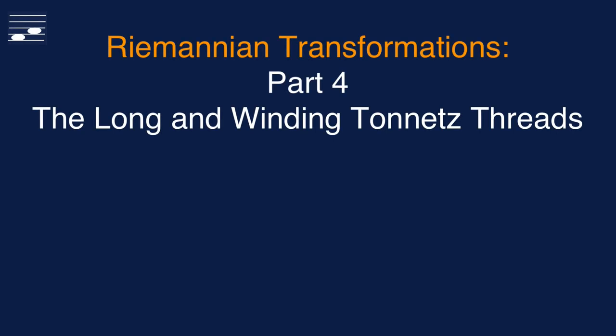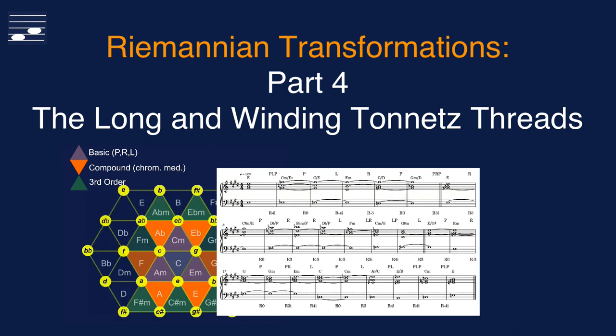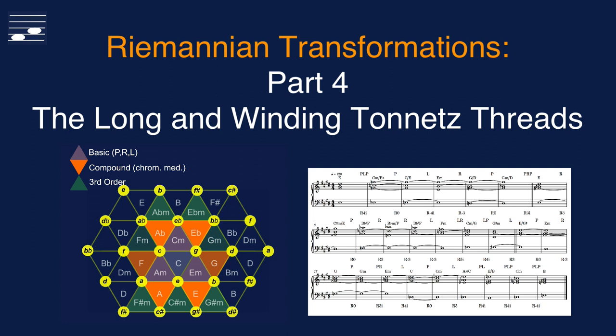In the final episode from the series on Neo-Riemannian transformations, I'll present two somewhat longer composition examples. These are based on chord progressions that move along a path in the Tonnetz diagram covering many major and minor triads. This is achieved by using both basic and compound transformations. At the end I'll comment on the potential and limitations of Neo-Riemannian theory.